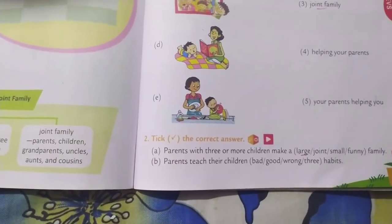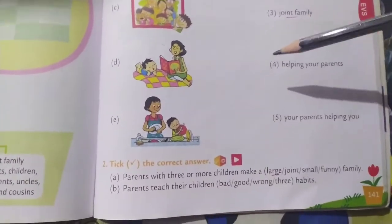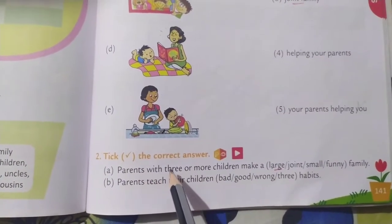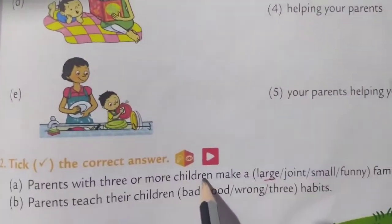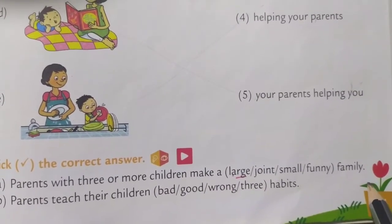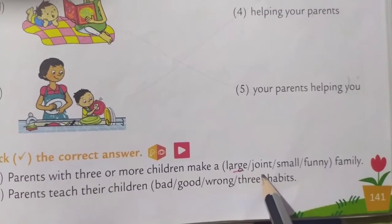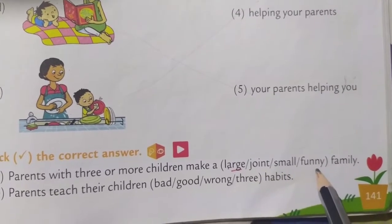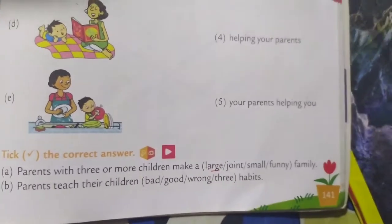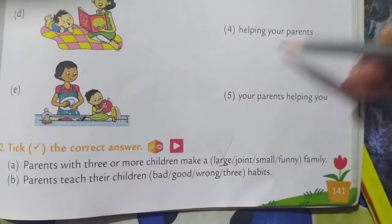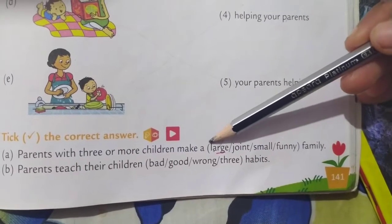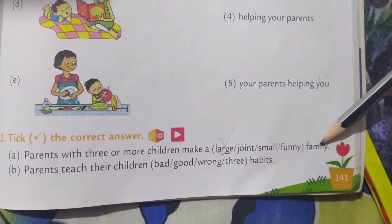Then next is tick the correct answer. All of you read with the teacher. A: 'Parents with three or more children make a dash family.' Options: large, joined, small, funny. If there are three or more children, we can say it is a large family. Put tick on large. Spelling: L-A-R-G-E. Large family.